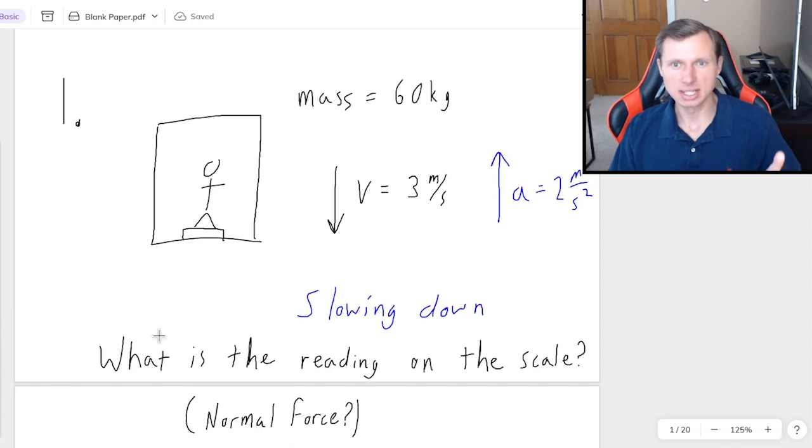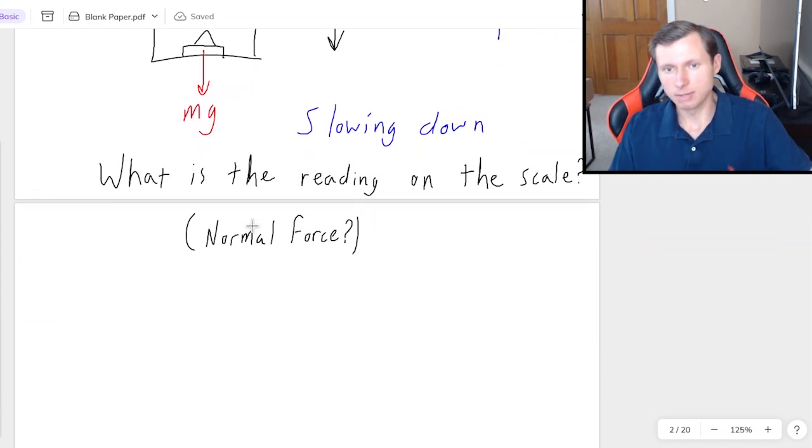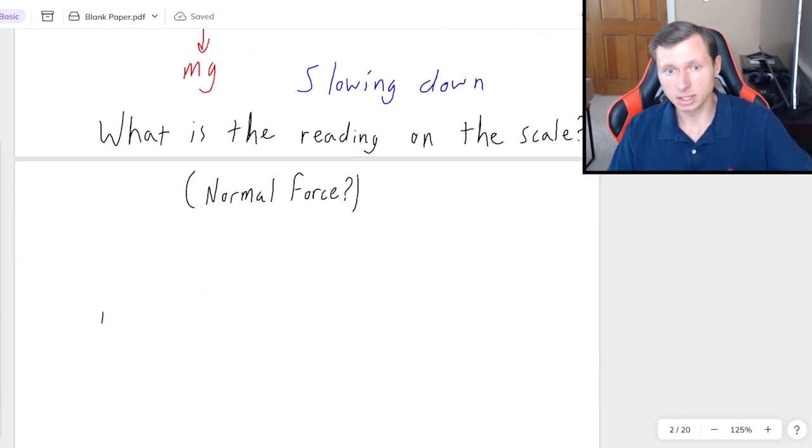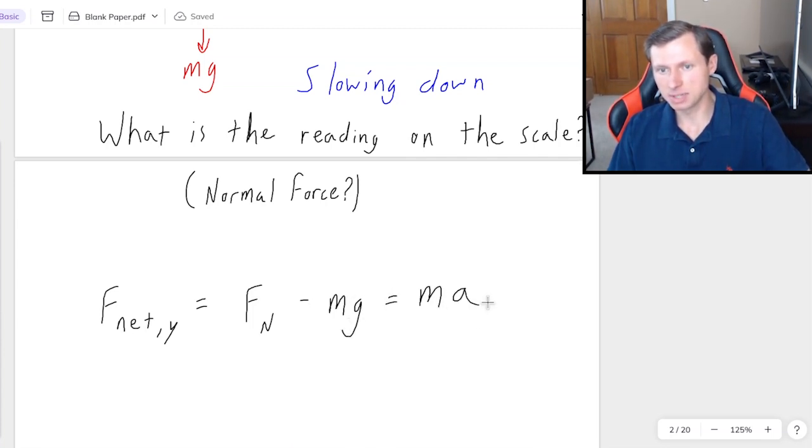So let's go ahead and solve this. Step 1 is free body diagram. I have a weight force of mg pointing down, and a normal force pointing up, which I like to call Fn. And that's it. There's no other forces touching this person. So then my next step is writing the Newton's second law equation: F net y equals all the forces going up, which was just Fn, minus the forces going down, which was just mg. And I set that equal to mass times acceleration.